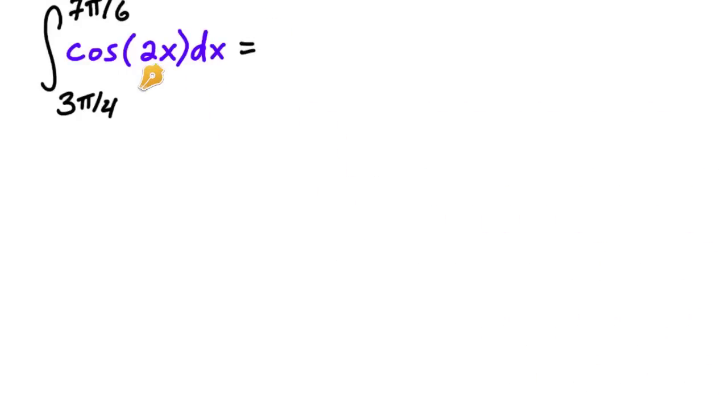So for this function we want to find first the antiderivative. The function, when we get the derivative of it gives us cosine of 2x, is sine of 2x. But then remember, we're going to have to divide by 2 here.